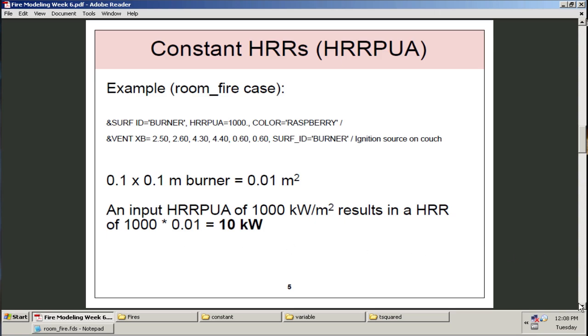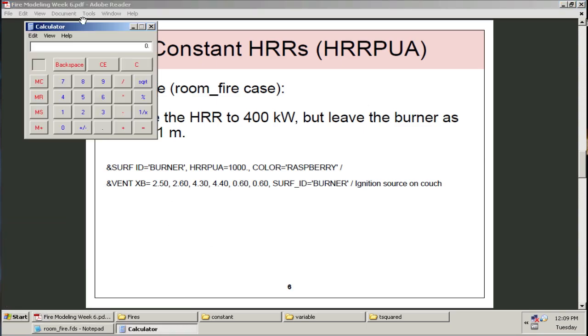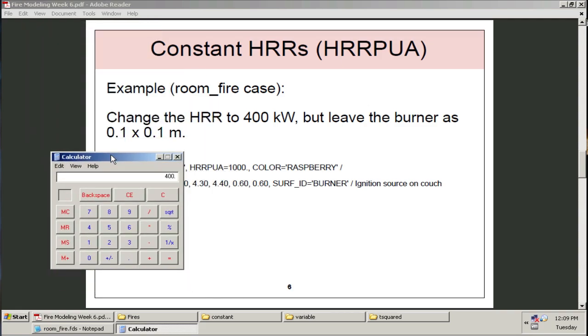If we look a little bit more into some examples of modifying these lines, let's say we wanted to change the heat release rate to 400 kilowatts, but we wanted to leave the burner alone as 0.1 by 0.1 meters. With those same two lines, we're going to leave this vent line fixed because this tells the geometry of the burner. What we want to change is the HRRPUA. But we don't want to type 400 there because that's going to result in the wrong heat release rate actually coming out of there. The way to actually calculate that is pretty simple. If we open up a calculator here. If we want to get 400 kilowatts out, we can divide that by 0.01, which is the area, and we get 40,000. So, in this case, we would actually...